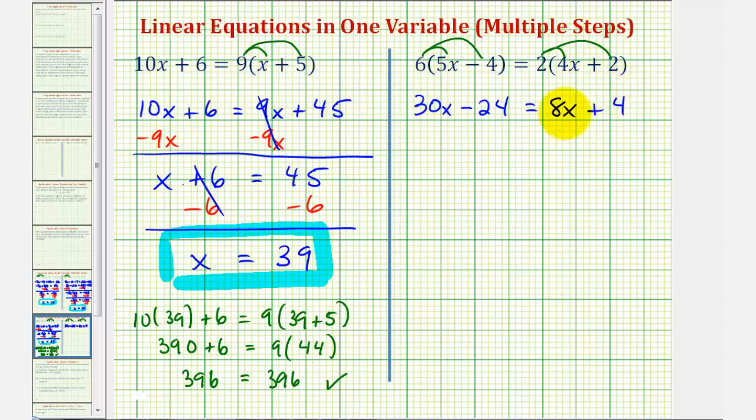Again, notice how we have variable terms on both sides of the equation. So for the next step we can either subtract 8x on both sides or subtract 30x on both sides. But again, normally most prefer the variable term on the left side. So we'll subtract 8x on both sides.